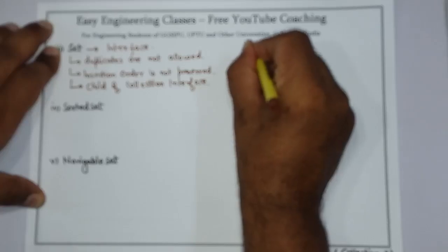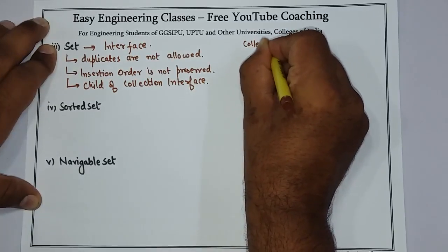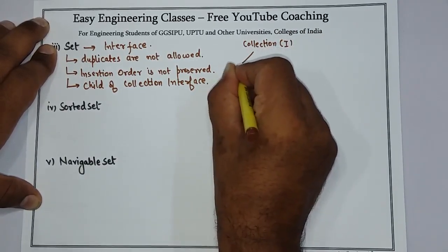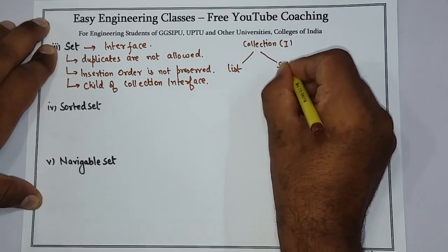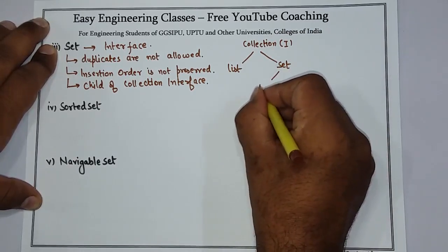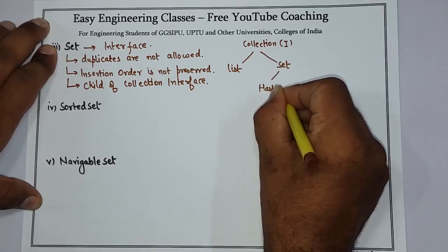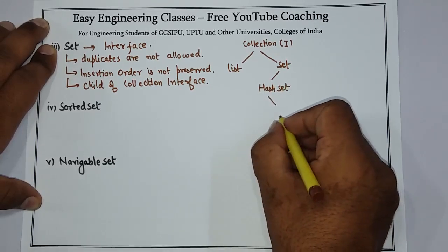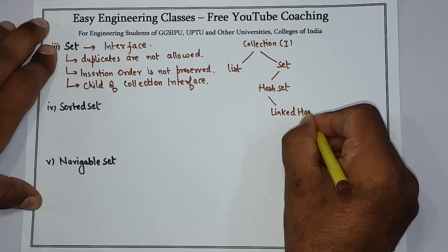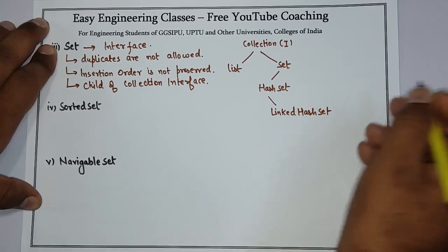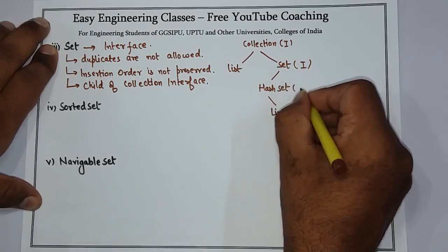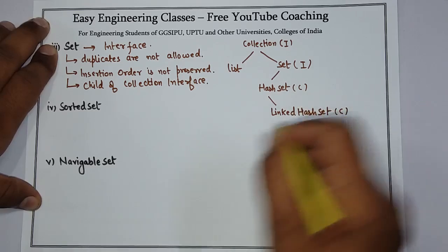Looking at the hierarchy: from Collection we get List, then there is Set. Under Set we have further hierarchy — HashSet, and from HashSet we have LinkedHashSet. Set is an interface, HashSet is a class, and LinkedHashSet is also a class.